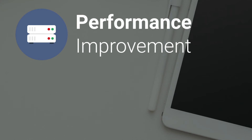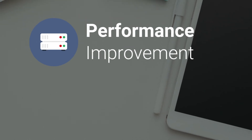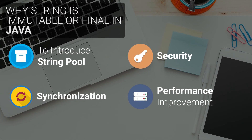Hence, in conclusion, the four main benefits of making the string class immutable are: it allows the existence of a string pool, it increases security, it ensures synchronization by making strings thread-safe, and it increases performance.